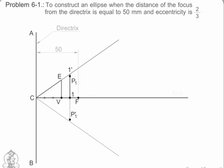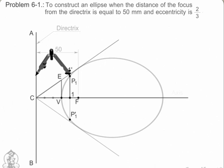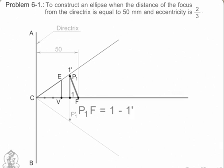These are the points on the ellipse. The distance of P1 from AB equals C1. P1F equals 1-1 dash and 1-1 dash upon C1 equals VF upon VC equals 2 by 3.